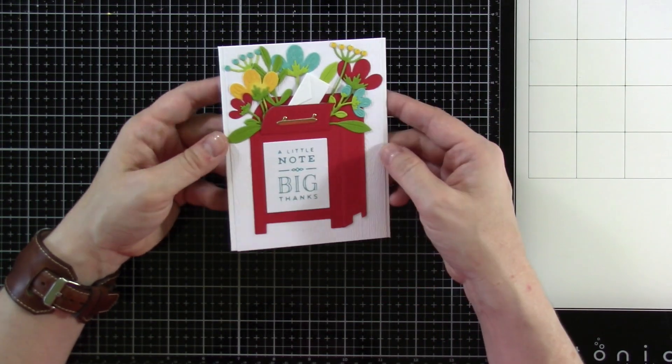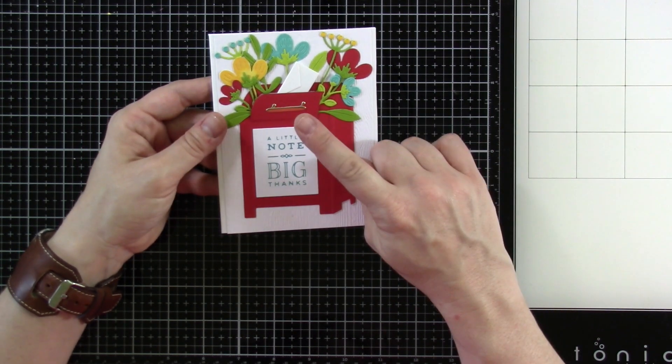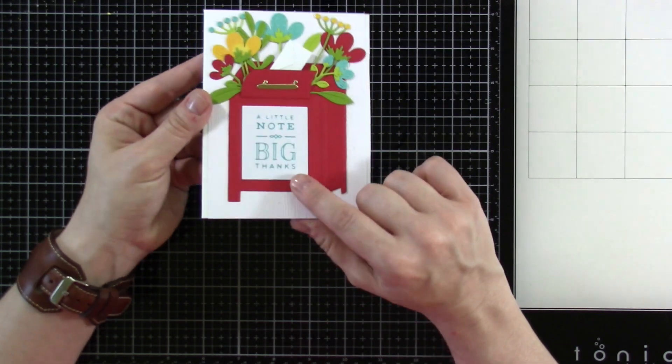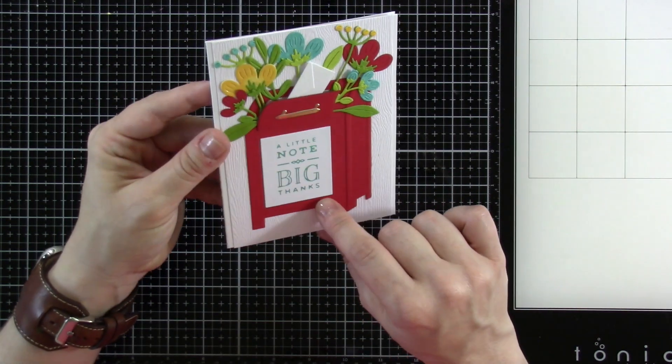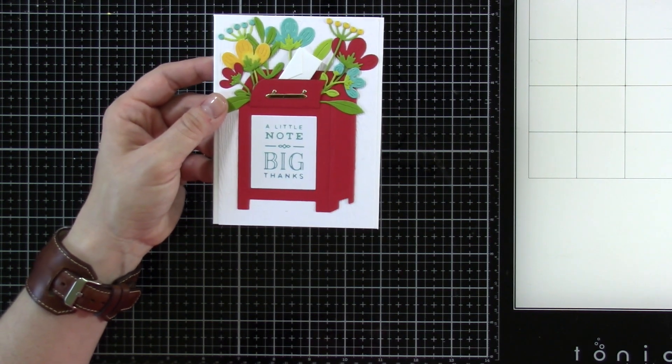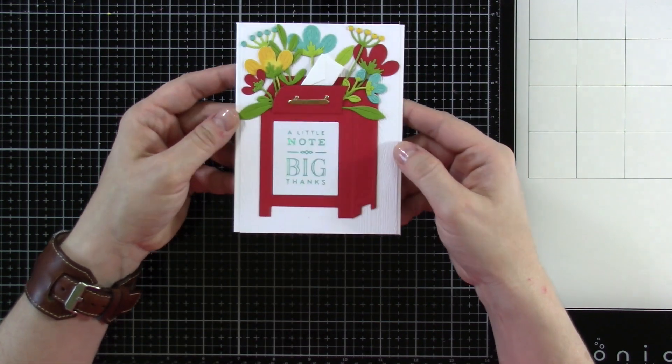Then you get all these fun little flowers and things. And then you can get the All Occasions Mailbox greeting, which this Glimmer comes from, the Glimmer Foil plate comes from that. And then I'm going to show you the Parcel and Post Heart Decor. But like I said,